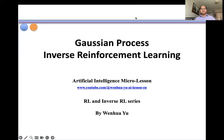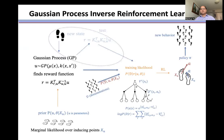In this video, I introduce Gaussian process inverse reinforcement learning. Gaussian process inverse reinforcement learning uses a Gaussian process to generate the structure of a reward function. Then expert demonstrations are used to train this likelihood, and this reward is used in reinforcement learning to find the optimal policy. The agent under this policy then generates its own trajectory.